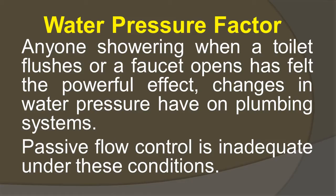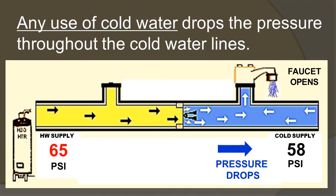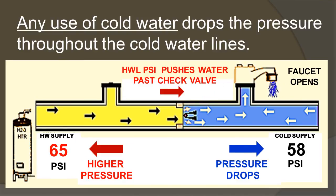The water pressure factor: anyone showering when a toilet flushes or a faucet opens has felt the powerful effect changes in water pressure have on plumbing systems. Passive flow control is inadequate in preventing hot water siphoning under these conditions. As the animation shows, any time cold water is used, the pressure in the cold water line drops. The higher pressure of the hot water line forces water through passive check valves and into the cold water line.